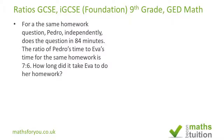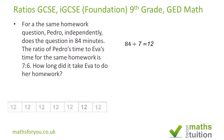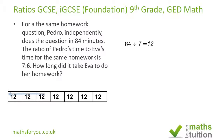We know that Pedro did the homework in 84 minutes and the ratio is seven to six, so there are seven parts for Pedro. If we divide 84 by 7 we get 12. So each part is 12 minutes — there are seven of those twelve-minute parts, and that's Pedro's time.